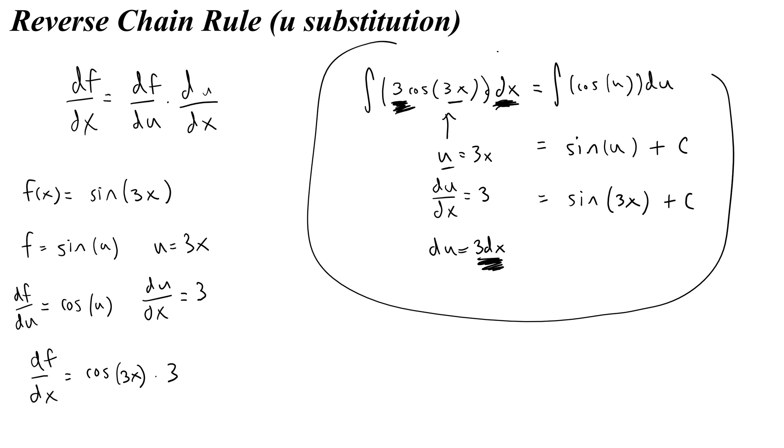So this is how you do the reverse chain rule, which is often something called u substitution, where you try and find something equal to u, you take its derivative, and then you write it in this form and try and replace something up here in the original function.